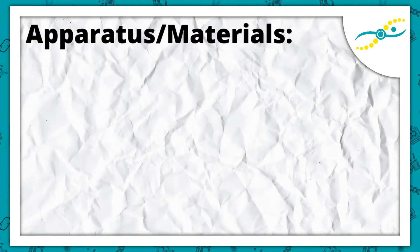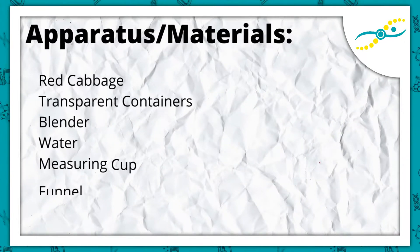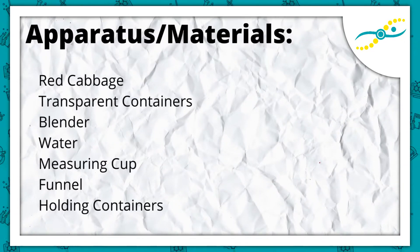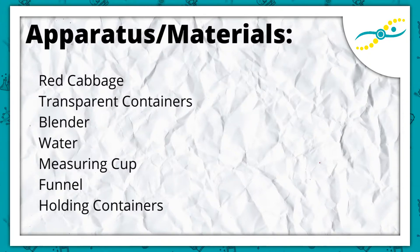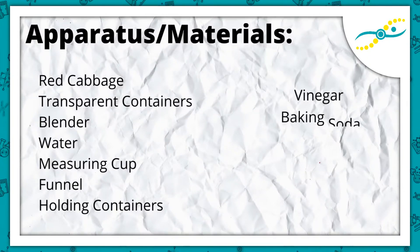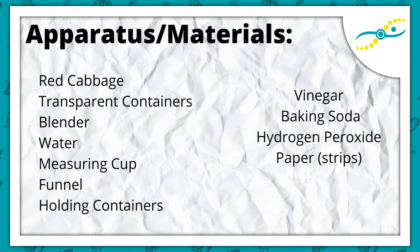The apparatus and materials that we need for this experiment include red cabbage, transparent containers, a blender, water, a measuring cup, a funnel, folding containers, and samples such as vinegar, baking soda, water, and hydrogen peroxide that we will be testing, as well as paper for indicator strips.